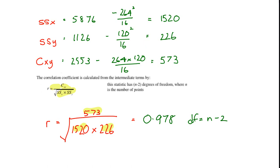So if we work that out we'll get a value of 0.978. That value is very high, indicating that those two variables are very closely correlated. Degrees of freedom for this type of test are n-2, which is 14.